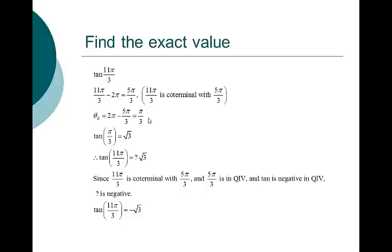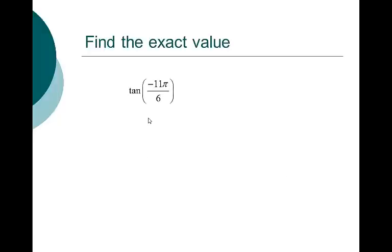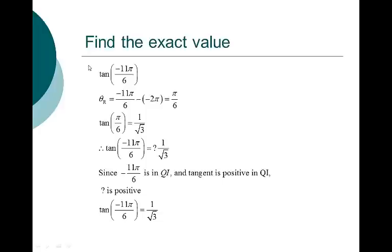Had it been in quadrant 1 or 3, it would have been positive. How about the tangent of negative 11 pi over 6? You could pull the negative out front, but I'm going to keep it in. The reference angle is pi over 6. The tangent of pi over 6 is 1 over square root of 3. If you start at 0 and go backwards 11 pi over 6, you end up in quadrant 1 where all functions are positive, so the tangent is positive 1 over square root of 3.